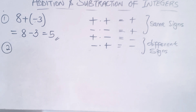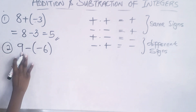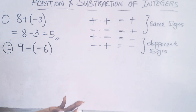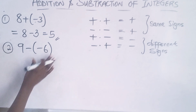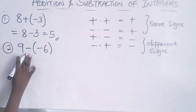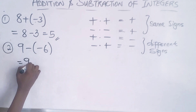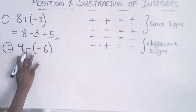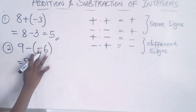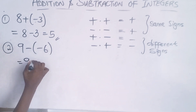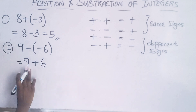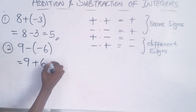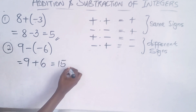You can use the number line, calculator, counting method, or work it in your head. Second example: nine minus minus six. Removing the bracket — minus times minus gives you plus, because it's the same sign. So nine minus (−6) becomes nine plus six, which equals fifteen.